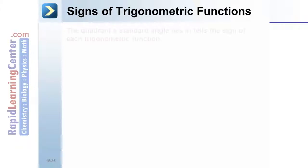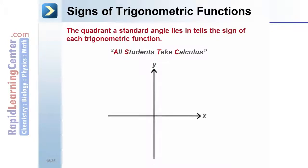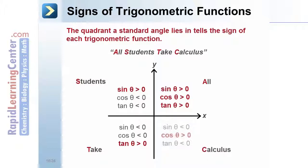Signs of Trigonometric Functions: The quadrant a standard angle lies in tells the sign of each trigonometric function. All students take calculus — take the first letter from each word to remember the signs in quadrants 1 through 4. In the first quadrant, all functions return a positive value. In the second quadrant, only sine and its reciprocal cosecant return positive values. In the third quadrant, only tangent and its reciprocal cotangent return positive values. In the fourth quadrant, only cosine and its reciprocal secant return positive values.